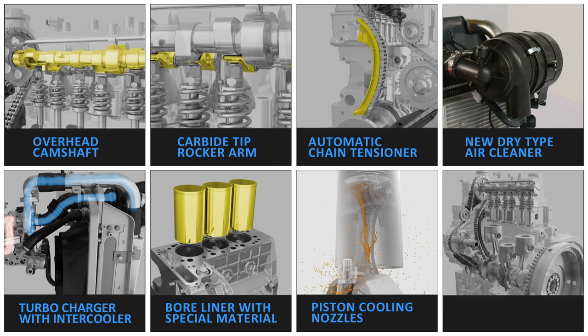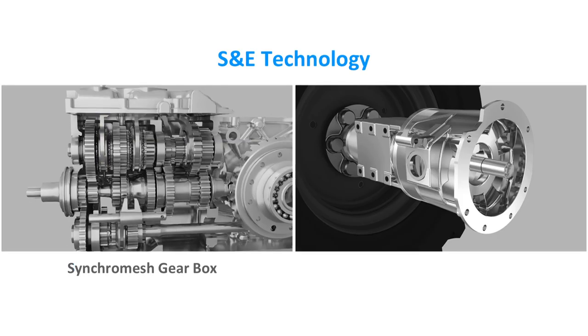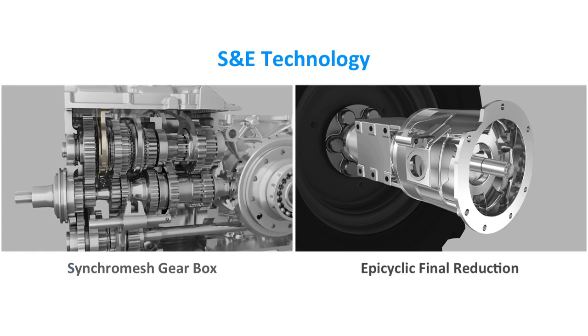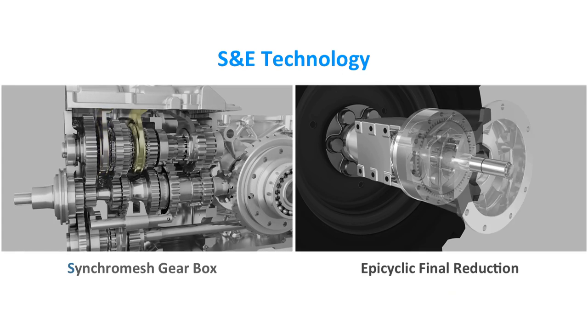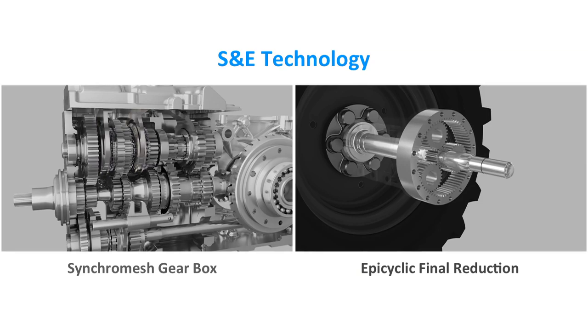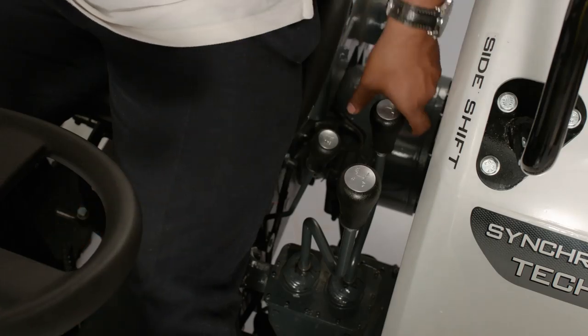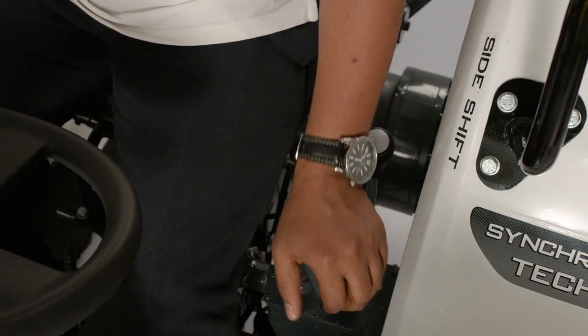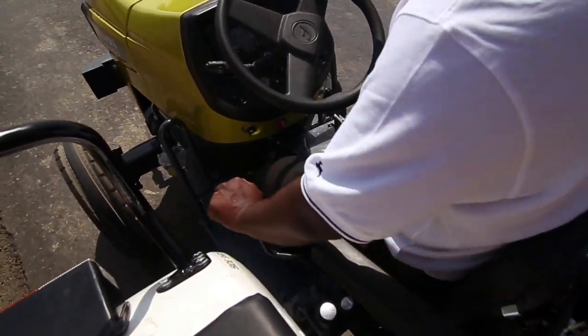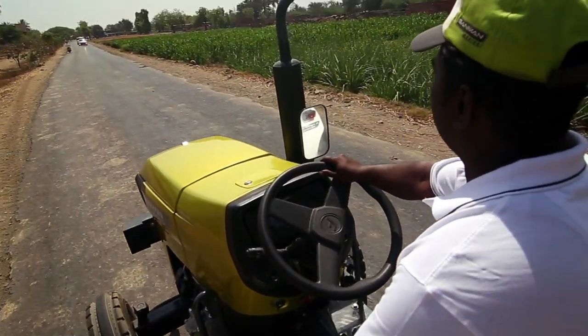The premium Sunmark range is equipped with the advanced synchromesh and epicyclic, i.e. S&E technology. The synchromesh gearbox enables shifting to the appropriate gear without stopping the tractor like a modern passenger car.